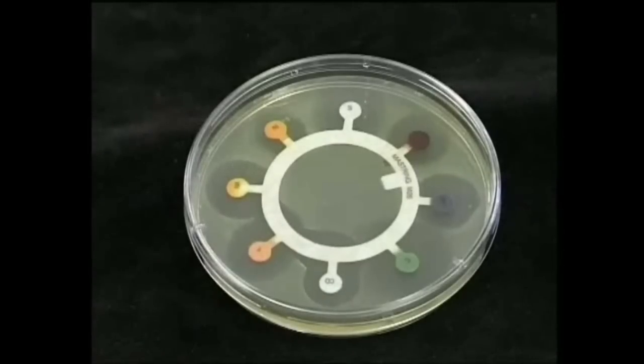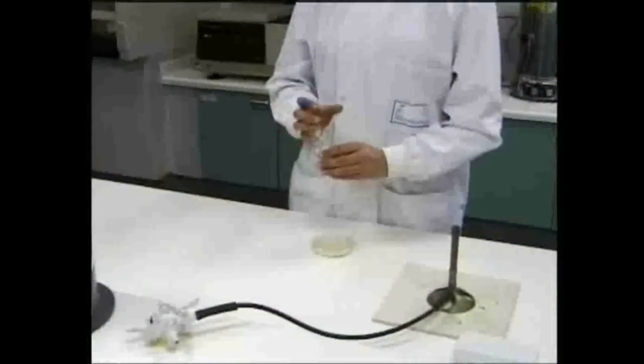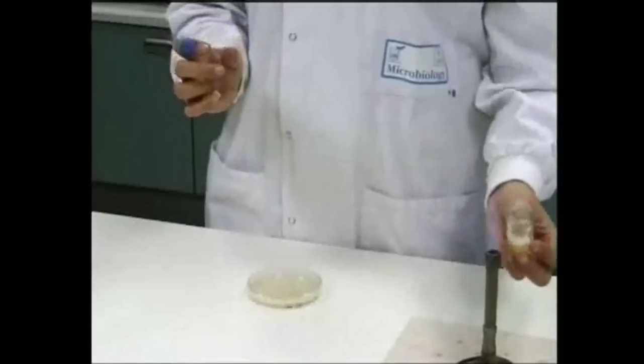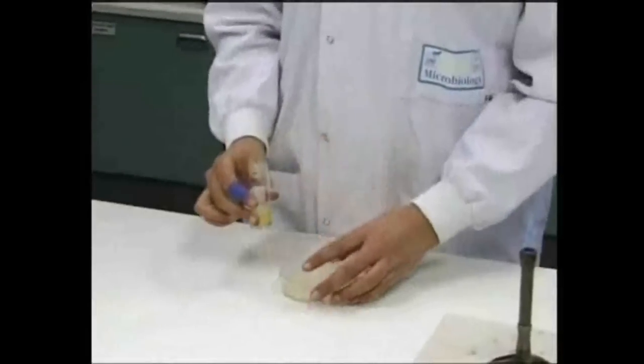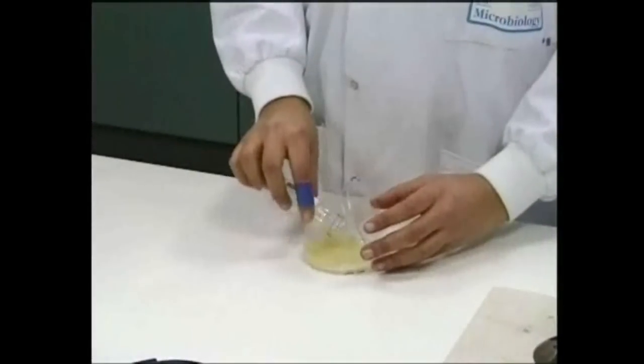Lawns can be prepared in one of two ways. Firstly, the lawn can be created by flooding a sterile agar plate with the desired microorganism. To flood the agar plate aseptically, the culture bottle is opened and the neck is flamed. The lid of the Petri dish is then raised and enough bacterial culture to cover the surface of the agar is tipped onto the plate. This is usually about one cubic centimeter.